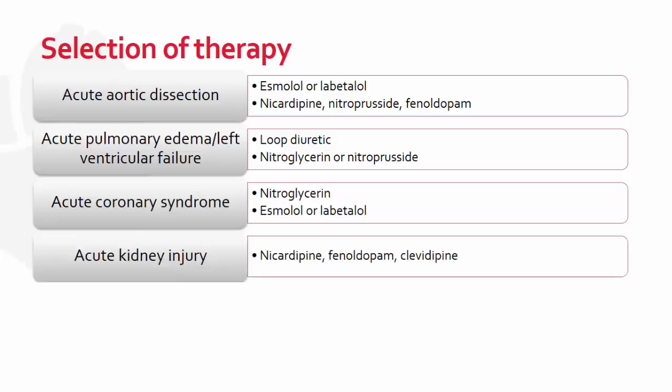In patients presenting with acute kidney injury, we want to select agents that will cause vasodilation without affecting renal clearance or accumulating in the setting of acute kidney injury. Options include nicardipine, fenoldopam, or clevidipine. Agents such as enalaprilat should not be used in this situation.